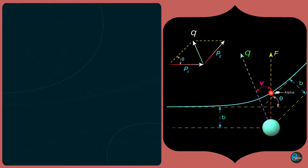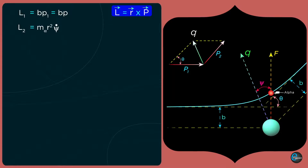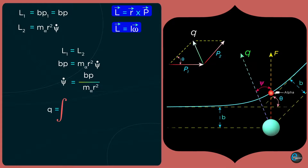Since we assumed elastic collision, the angular momentum of the system is conserved. The angular momentum of the alpha particle before interaction is L₁ = b·p₁ = bp. The angular momentum at any time t is L₂ = m_α r² ψ̇, from L = Iω. From conservation of angular momentum, bp = m_α r² ψ̇, giving ψ̇ = bp / (m_α r²). Substituting this into the integral, q = ∫(Td · m_α r²) / (r² · bp) · cosψ dψ.